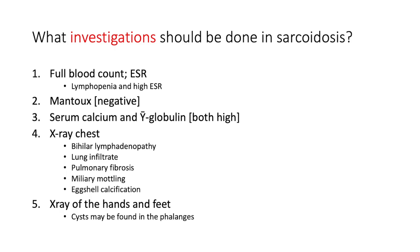For investigations, start with haematological workup: full blood count and ESR. In sarcoidosis you will find lymphopenia with a raised ESR, reflecting the inflammatory state of this multi-systemic granulomatous condition.